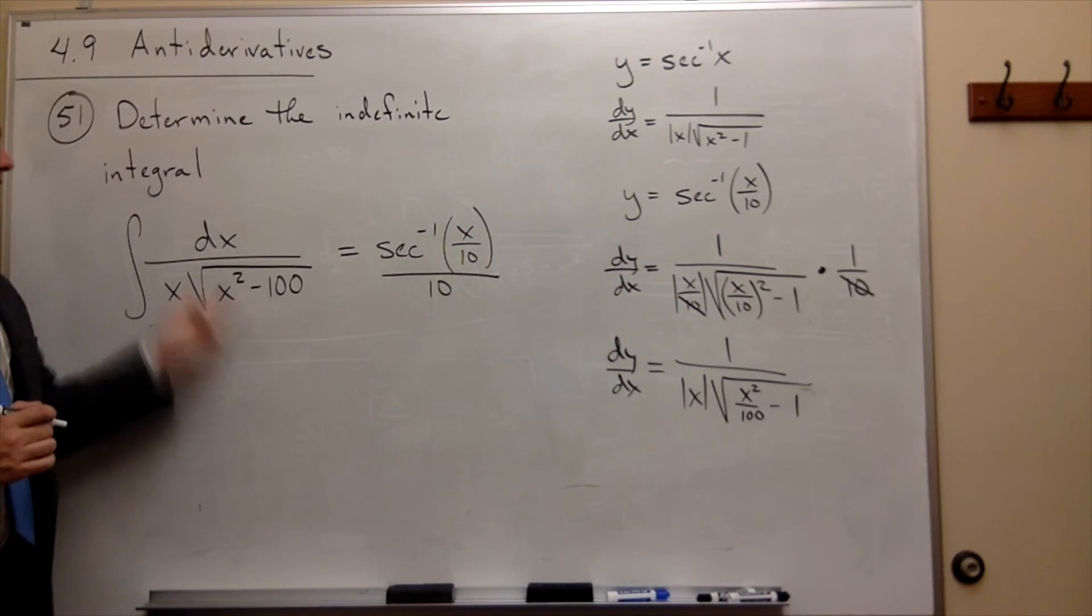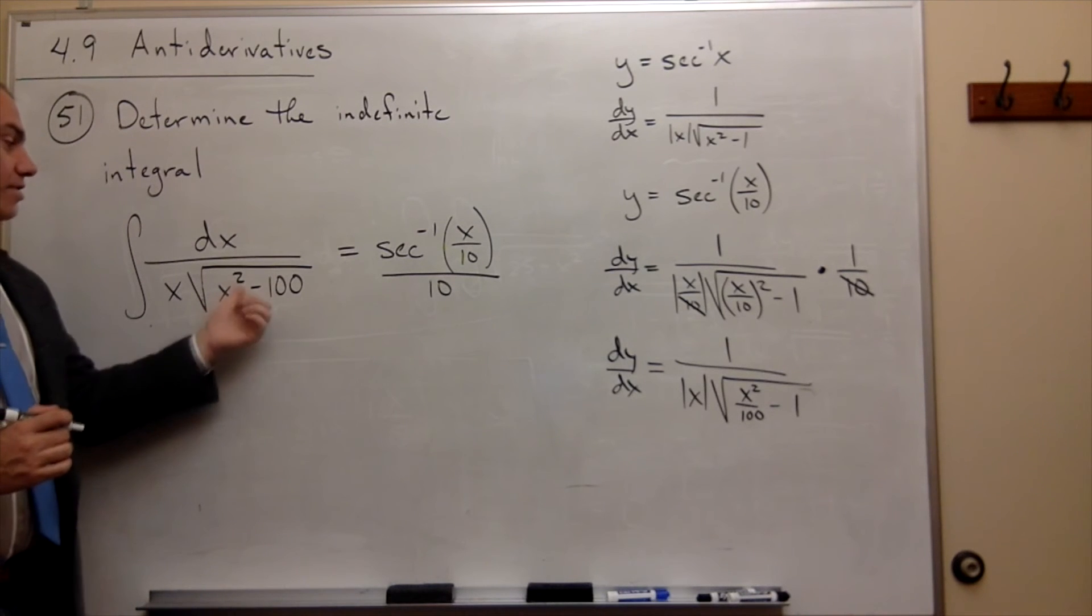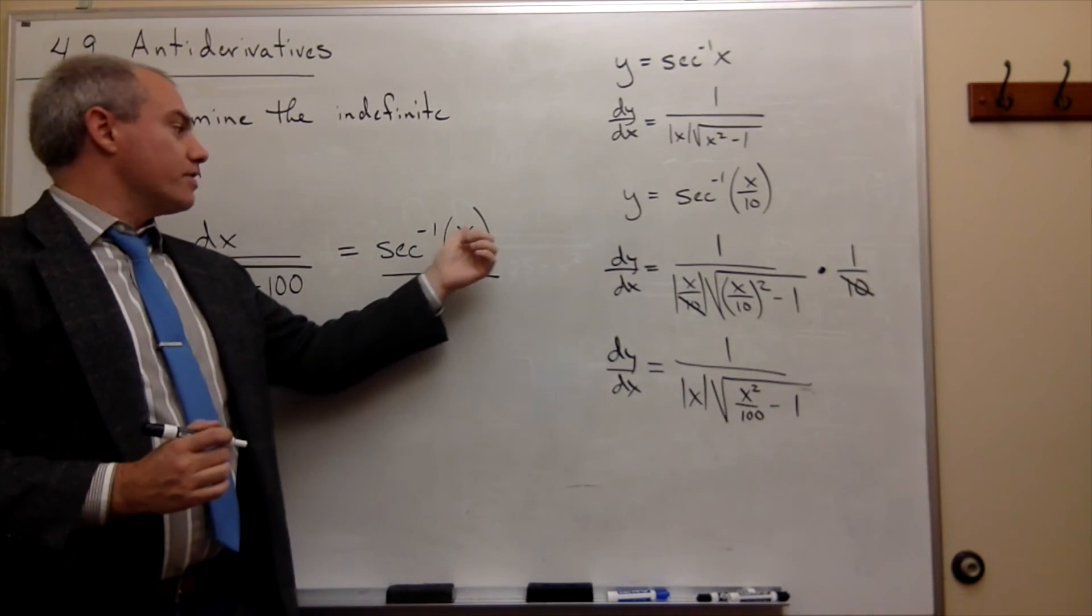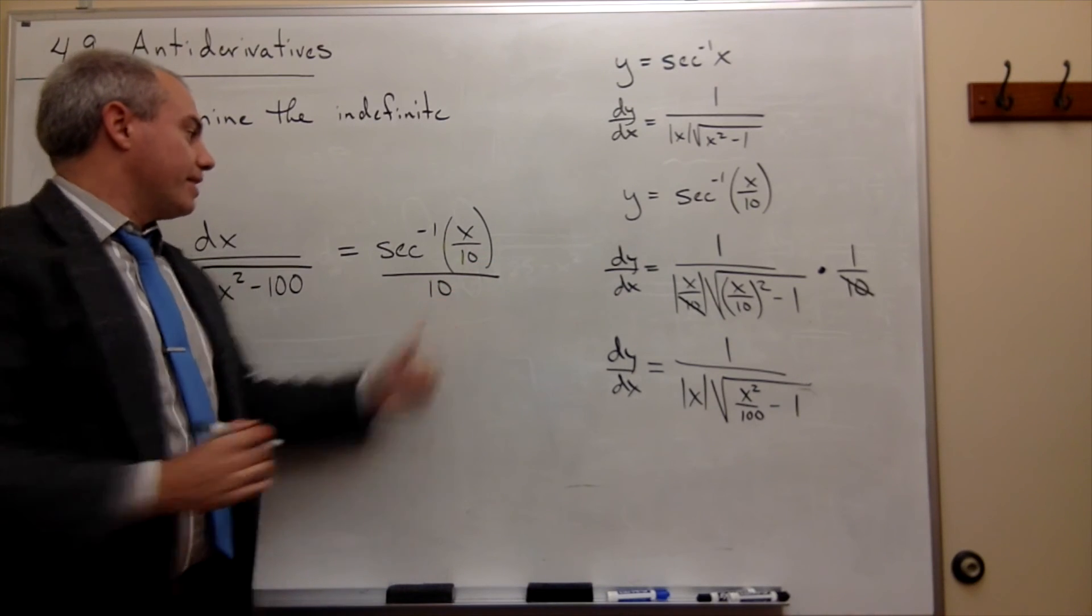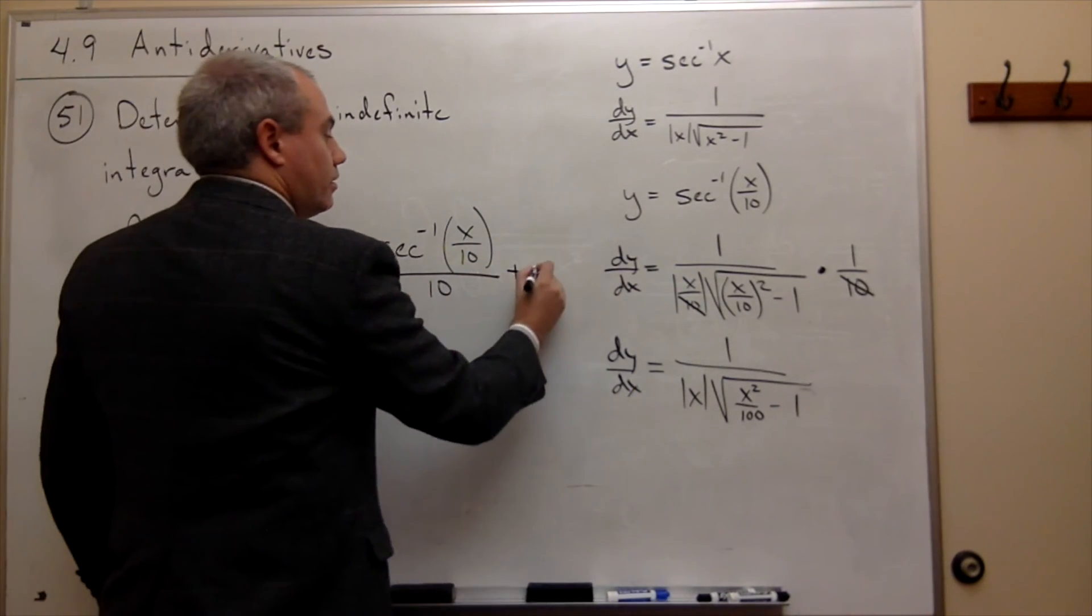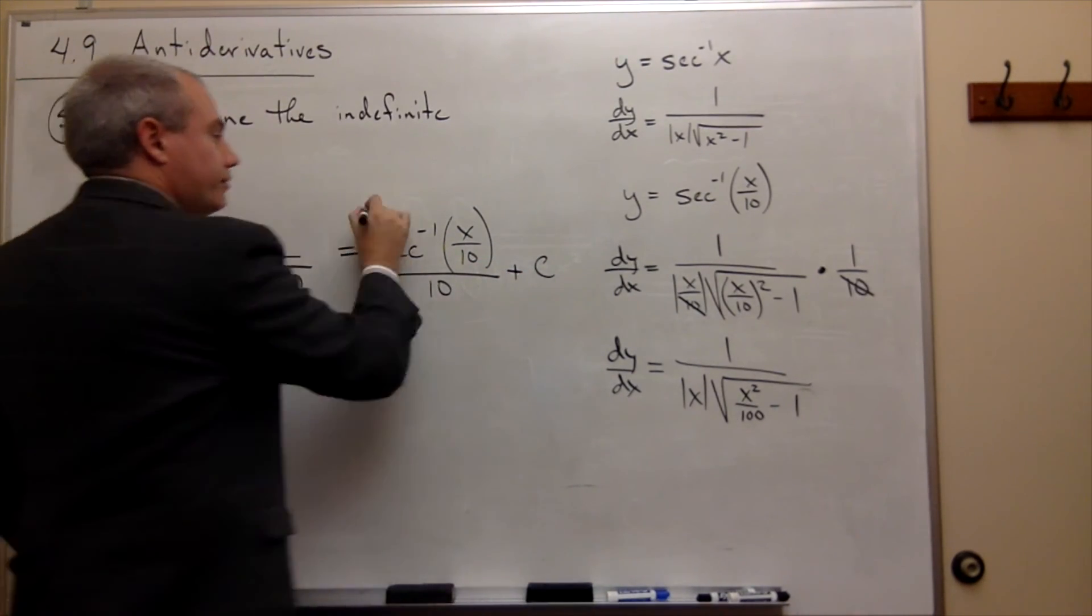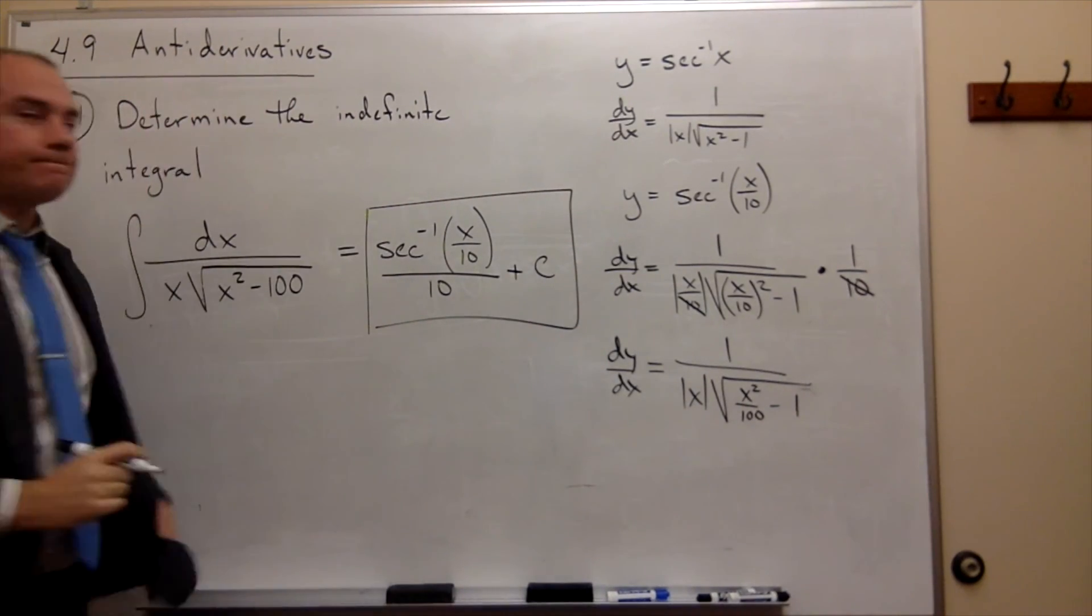So, the antiderivative of dx over x times the square root of x squared minus 100 would be secant inverse of x over 10 divided by 10, plus our constant of integration. And we're done. Thank you.